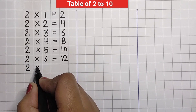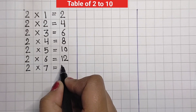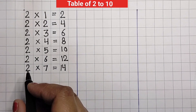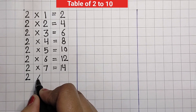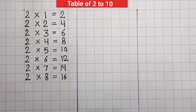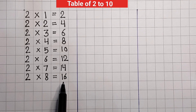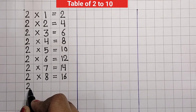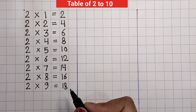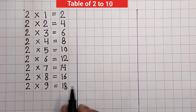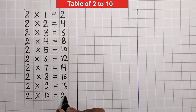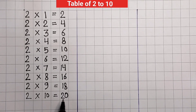Two, seven jaa, fourteen. Two, seven jaa, fourteen. Two, eight jaa, sixteen. Two, eight jaa, sixteen. Two, nine jaa, eighteen. Two, nine jaa, eighteen. Two, ten jaa, twenty. Two, ten jaa, twenty.